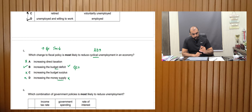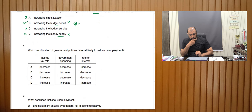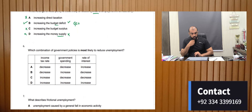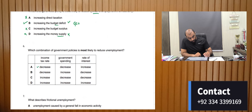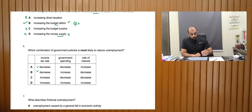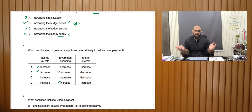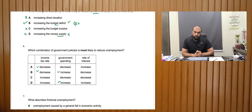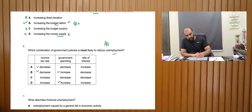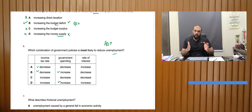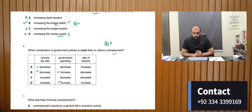Which combination of policies is most likely to reduce unemployment? We would need to reduce income tax and increase government spending — that gives us our answer. The reason we increase government spending is a simple rule: increase aggregate demand and the unemployment rate decreases. That is how I analyze these answers and you can use the same approach — it's pretty effective.